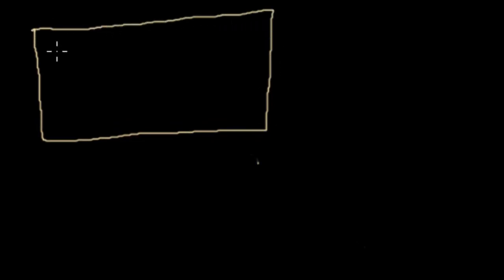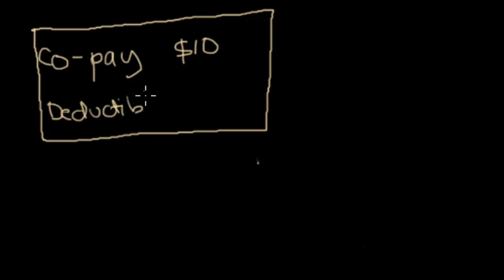So in our last video we talked about how we pay for medications and introduced the concept of both a co-pay and a deductible. Just for reference I'm going to draw that here again. The co-pay in our example was about $10 and the deductible in that example was about $400, so I'll write that here as well.